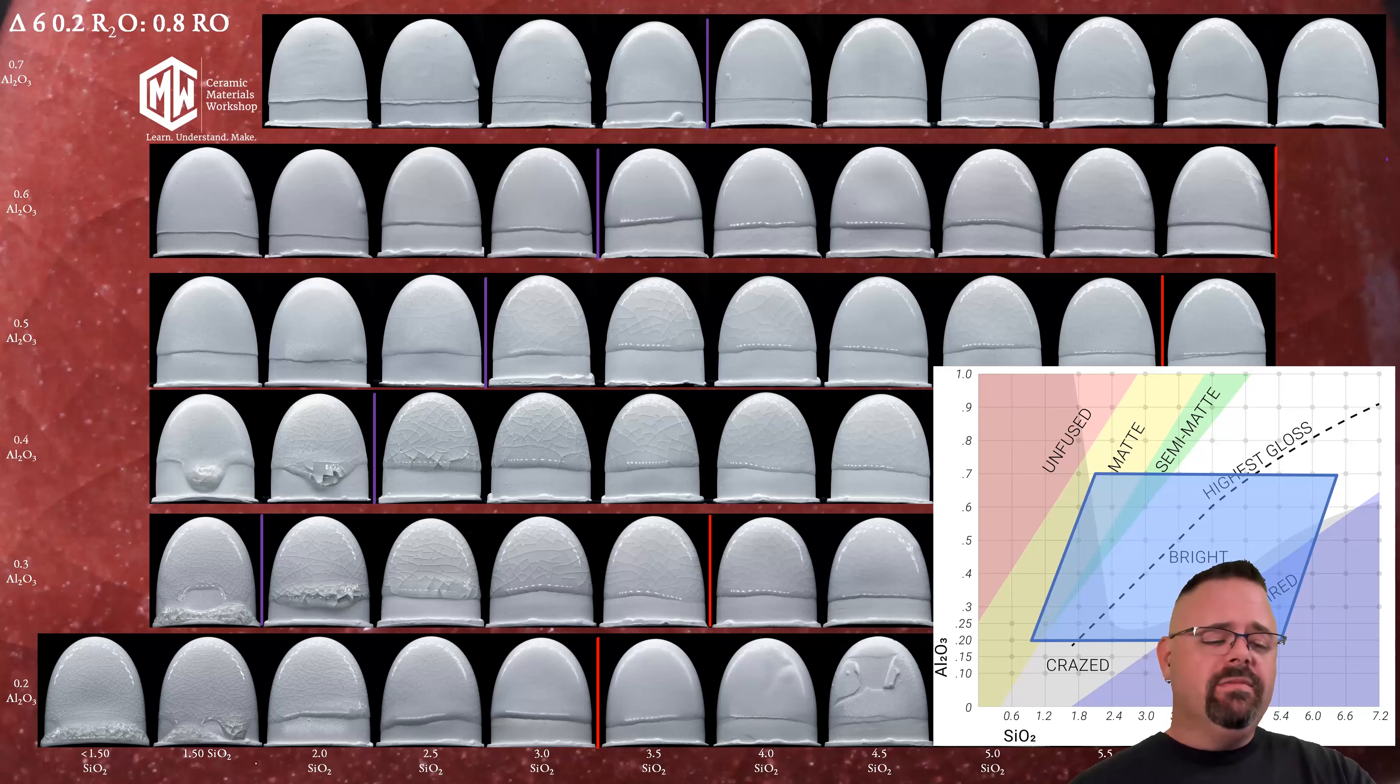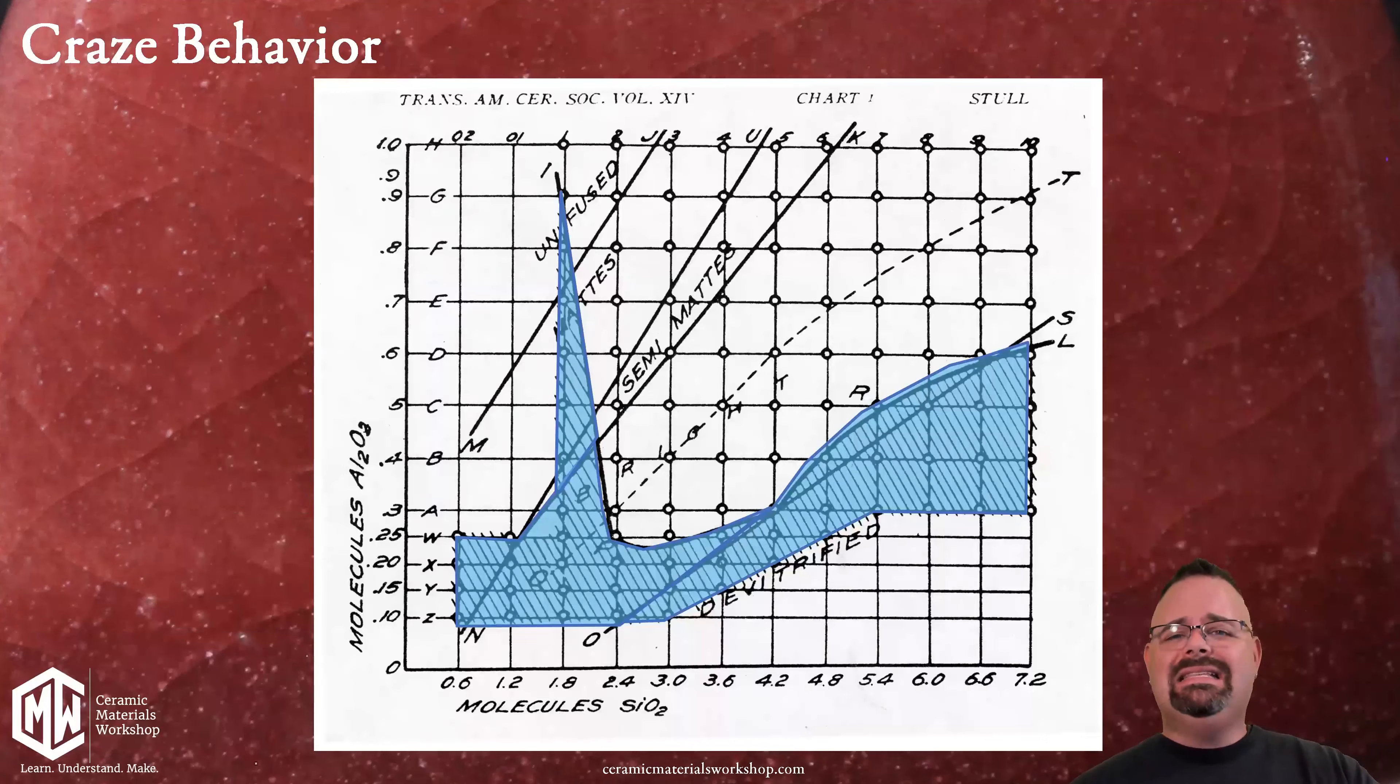Now there are some other features of maps. Some things that are true. Some shortcomings in the map and we need to look at those as well. Now the first is this hatch marked region in Stull's original drawing. And this hatch marked region is very interesting because this defines crazing. You see crazing is a real condition that can be defined by the map. Because crazing is a chemistry issue.